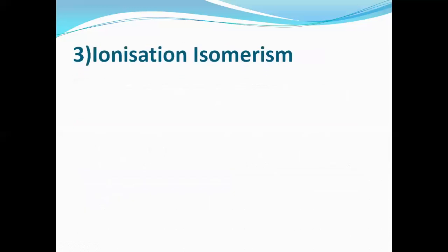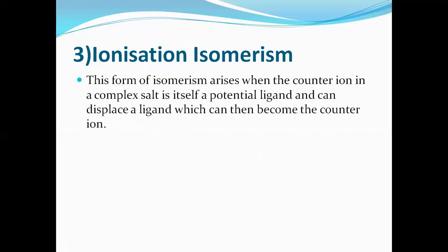The third type is ionization isomerism. As the word says, 'ionization' means when you add a compound to water or any solvent, the complex undergoes ionization. Whatever is written inside the square bracket does not undergo ionization; only the counter ion does. This type of isomerism is observed when complexes differ in the counter ions. By definition, two or more coordination compounds having the same molecular formula but differing in the ions when dissolved in solvent or water.